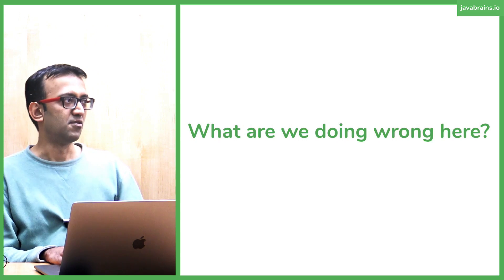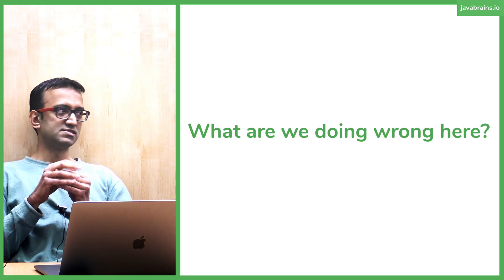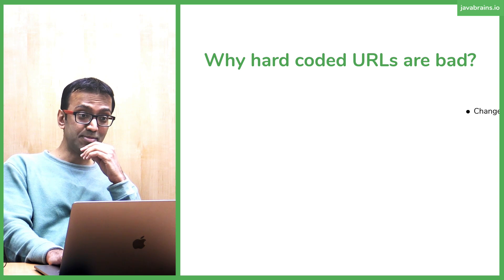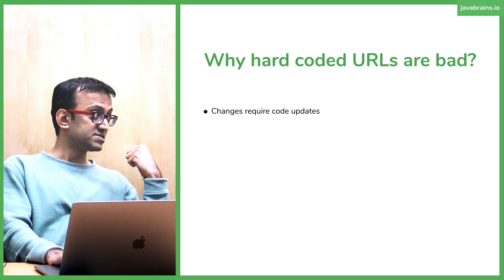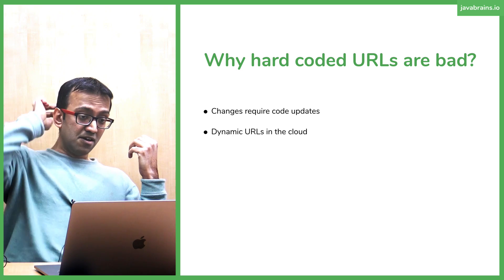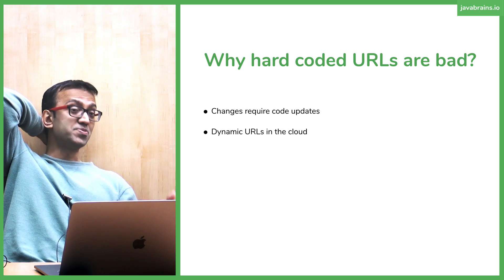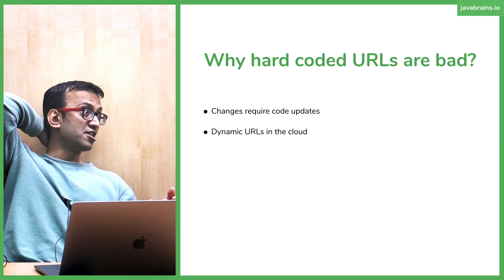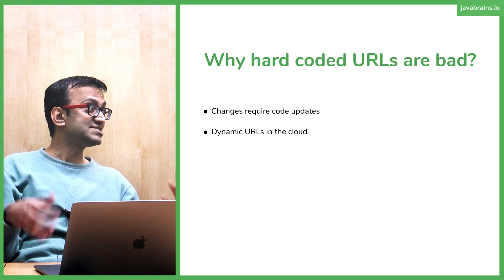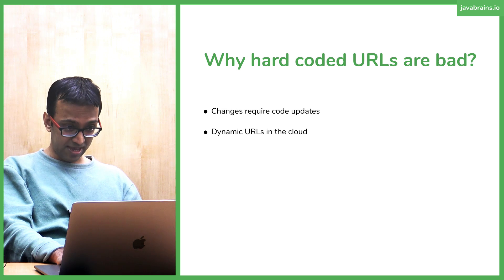What are we doing wrong with this whole thing? Hard coding the URL is one thing. Changes require code updates — that's the first thing. When you deploy something to the cloud, you get dynamic URLs. If you push this to an AWS instance or Heroku, you have no idea what that URL is going to be, and it changes, so you need to accommodate that change.